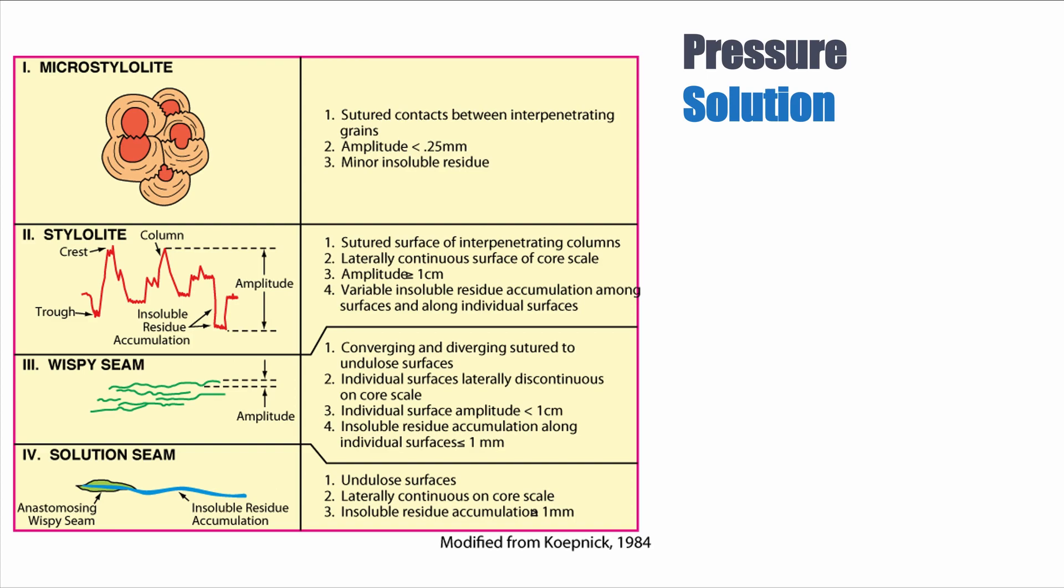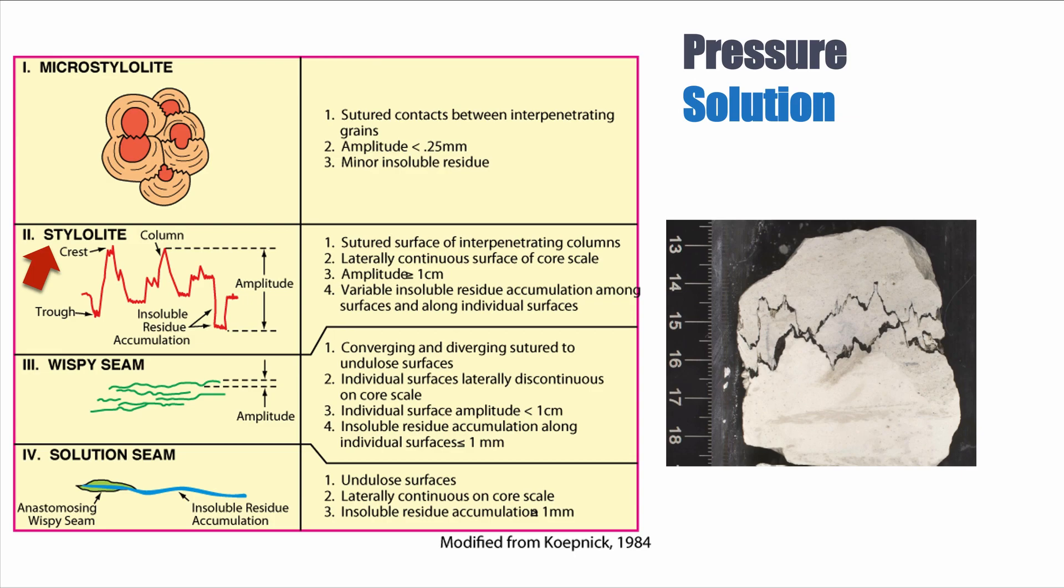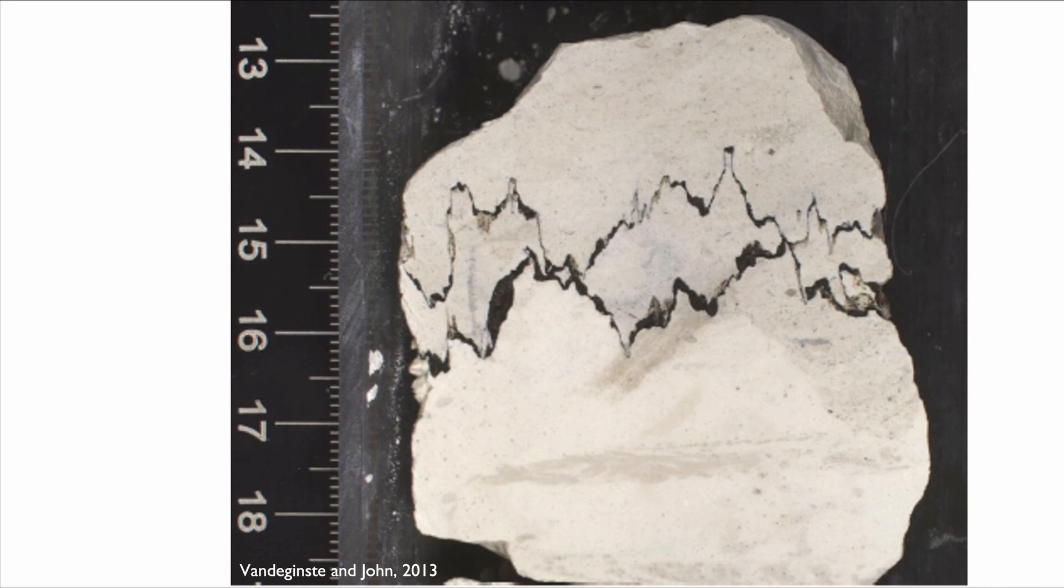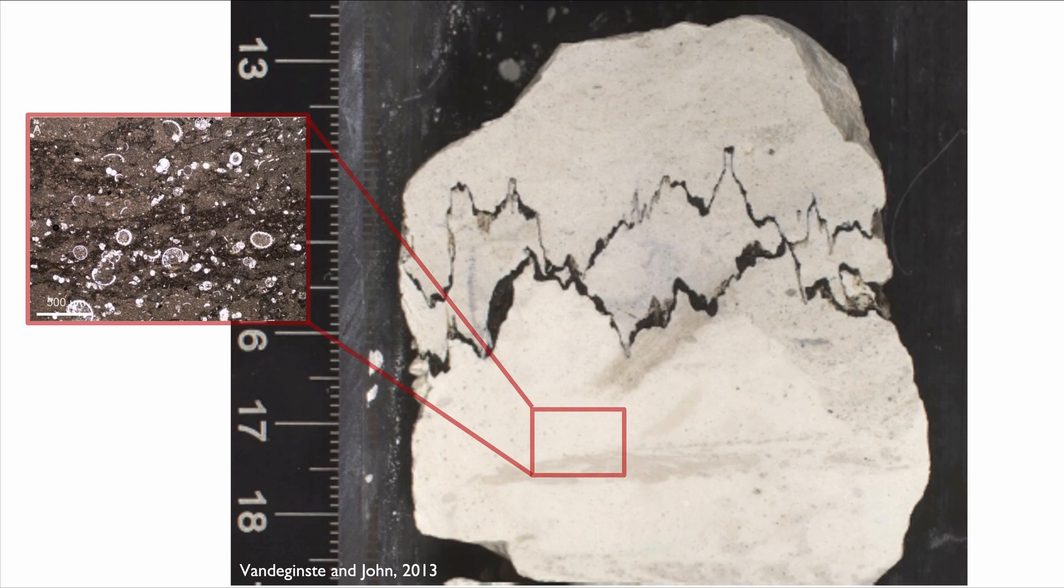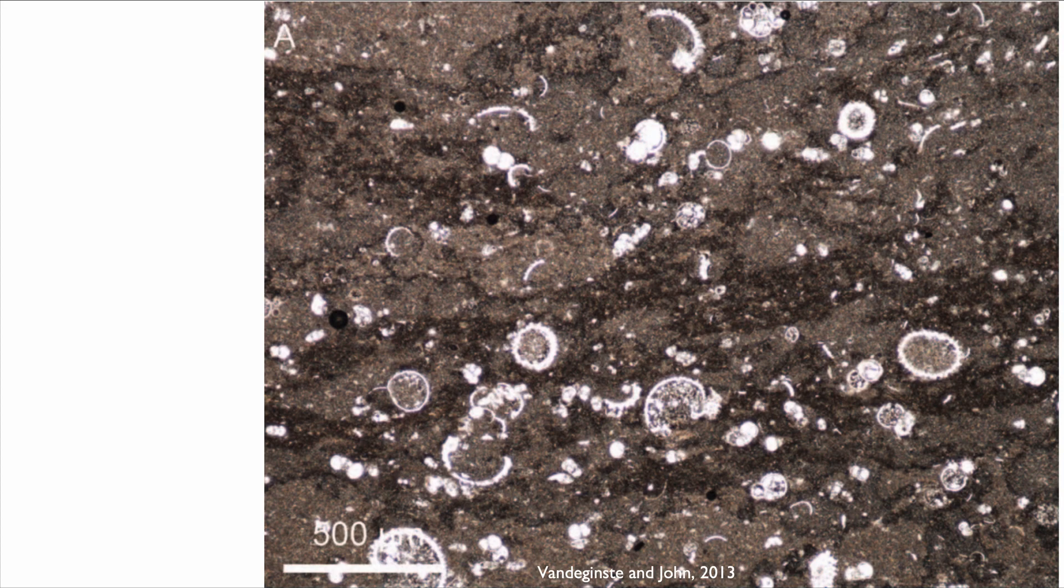Here's an example of a stylolite in limestone, actually from the Canterbury Basin that was recovered by IODP. You can clearly see we have a white limestone and this plane of dissolution that represents the stylolite. The reason the stylolite plane is black is because we concentrate the impurities. That means that the limestone was dissolved. The matrix of the limestone is very fine-grained. You can recognize planktonic forms and some clay material.